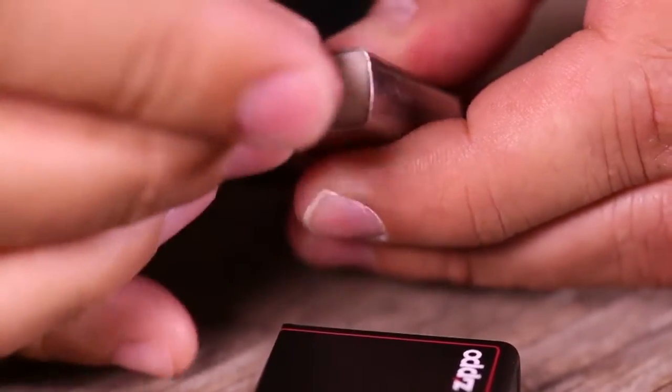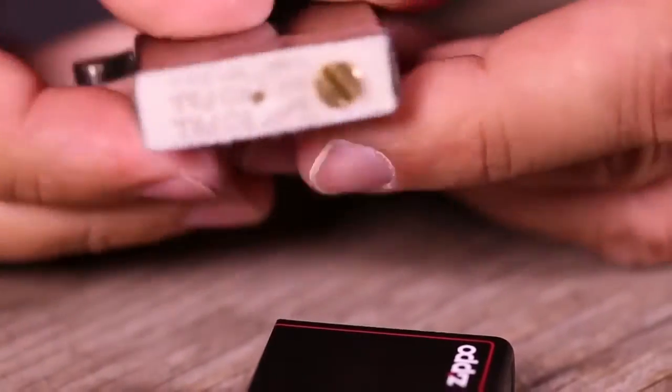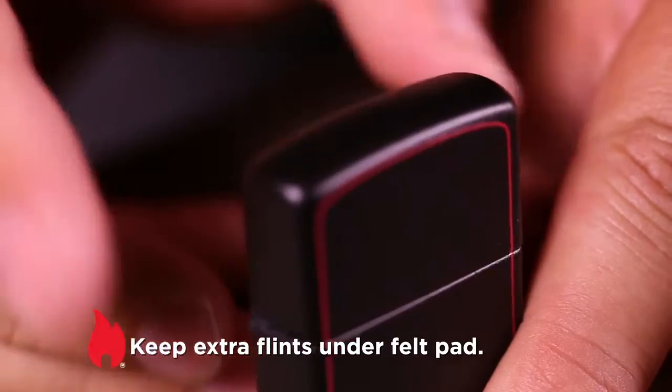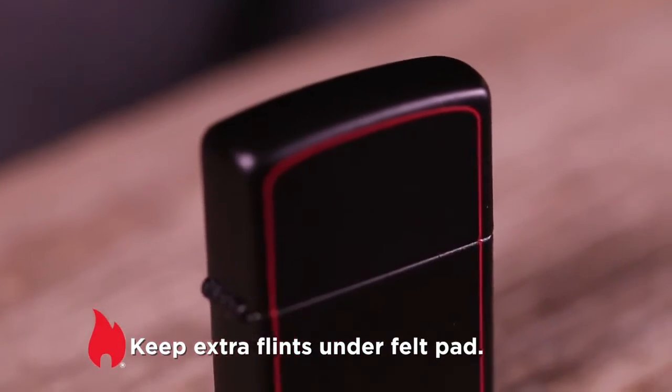If the flint wheel binds after a new flint is installed, turn the wheel backwards a few times. You can keep extra flints under the felt pad for future use.